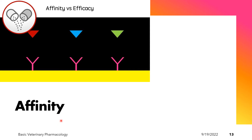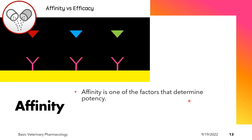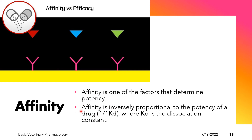Affinity is one of the factors that determines potency. Potency is defined as the amount of drug required to produce an effect. Affinity is inversely proportional to the dose required: the higher the affinity of the drug, the less dose is required to produce an effect; the lower the affinity, the more dose is required to produce an effect.